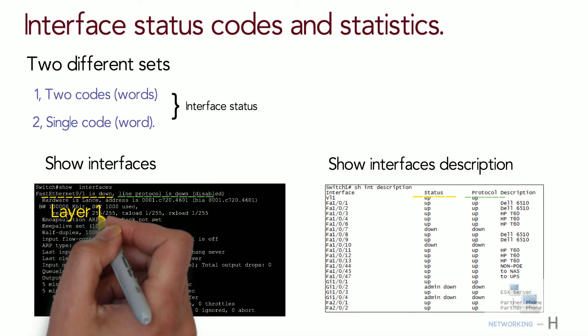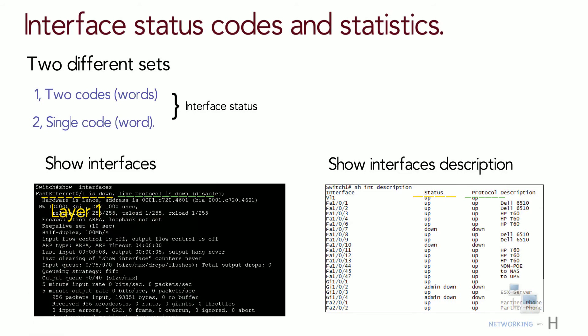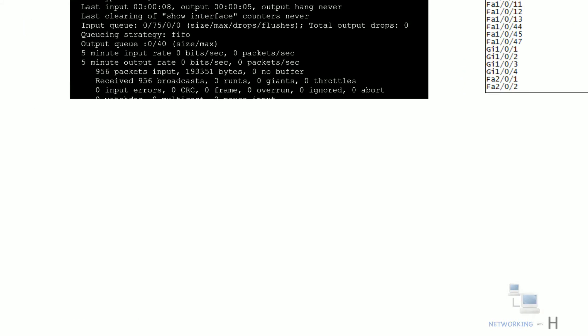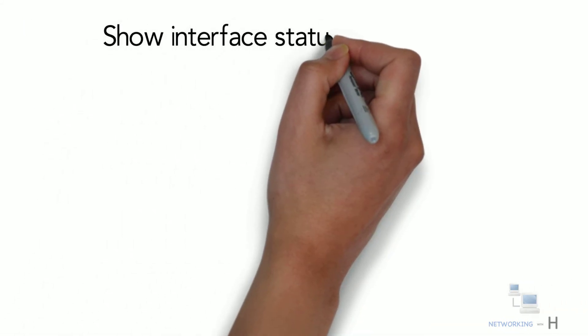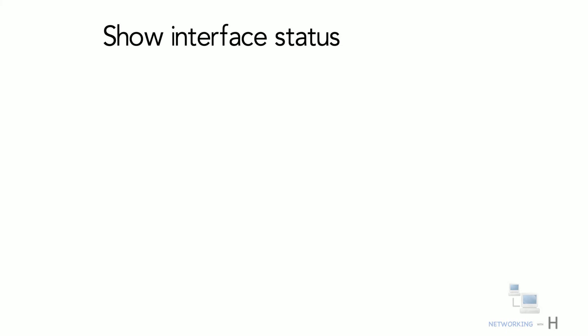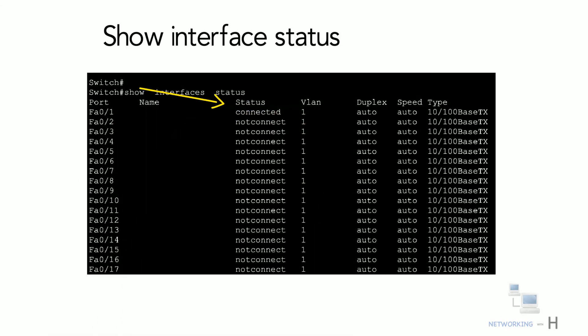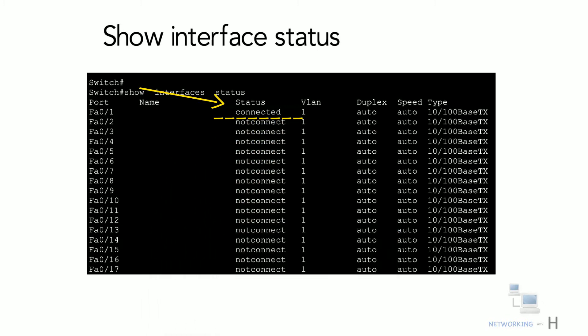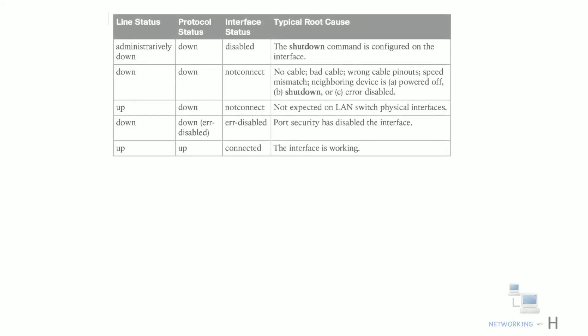The line status generally refers to whether Layer 1 is working, with protocol status generally referring to whether Layer 2 is working. The show interface status command lists a single-word state. The single-code interface status corresponds to different combinations of the traditional two-code interface status codes and can be easily correlated to those codes, such as the 'connected' state for working interfaces.